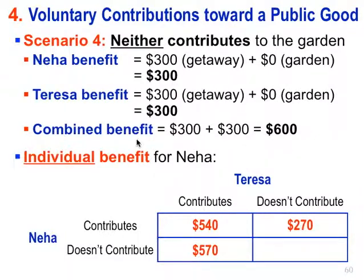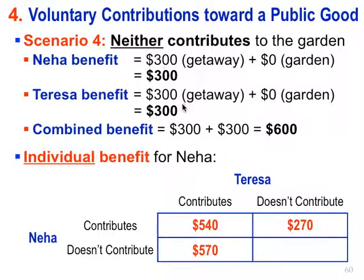Scenario four: what if neither contributes? That's the lower right. Neither Neha nor Teresa contributes. In this case, the individual benefit for Neha is $300 — she gets the weekend getaway. When they both do the same thing, they get the same benefit, so the individual benefit is $300. That is how you fill out the matrix for the individual benefit for Neha under the four different scenarios.